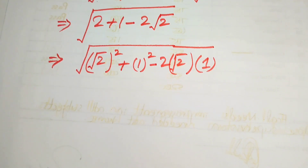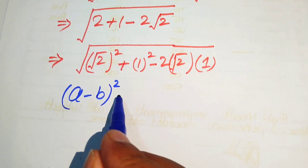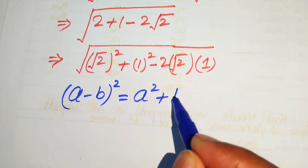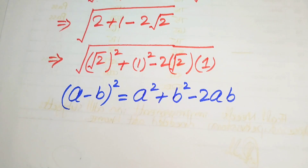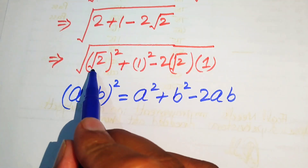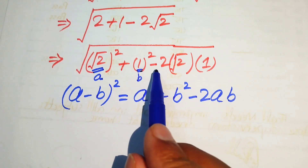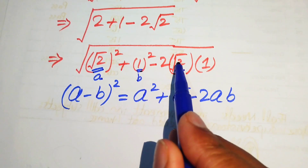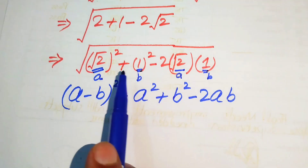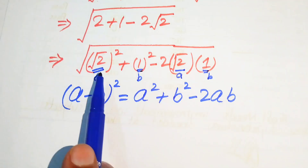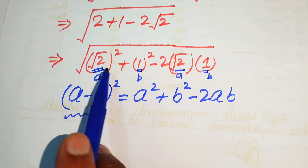Inside the square root sign, we will apply the square identity: if we have a minus b whole squared, it equals a squared plus b squared minus 2 times a times b. In the above expression, the value of a is square root of 2 and the value of b is 1. So we have a squared plus b squared minus 2ab, which is the expansion of this square identity.